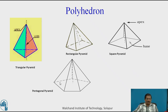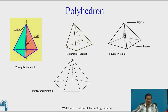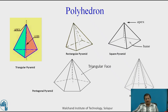This is a pentagonal pyramid. You have to draw a regular pentagon as per the given size, and from the center of the pentagonal shape draw a vertical perpendicular line equal to the axis length. Join that apex with each corner of the base to get the generators of the pyramid. All side faces will be triangular. This is a hexagonal pyramid with a base which will be a hexagon. Draw a perpendicular line through the center of the hexagon equal to the axis length to get the apex. Join all the corners with slant lines to get the generators for the hexagonal pyramid, and all these faces will be triangular.